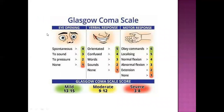The Glasgow Coma Scale has three categories: eye opening, verbal response, and motor response. A score of 15 out of 15 means the patient is normal; 13–15 indicates mild unconsciousness; 9–12 moderate; and 3–8 severe unconsciousness.